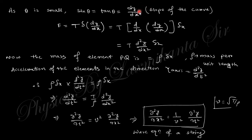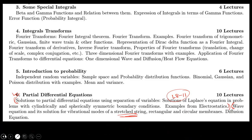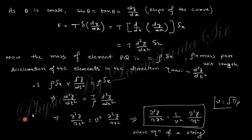The net force is T times delta(dy/dx). Since sin(theta) approximately equals tan(theta), the net force becomes T times (d/dx)(dy/dx) times delta-x, which gives T times (d²y/dx²) times delta-x.